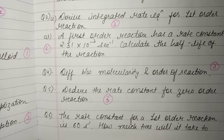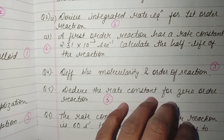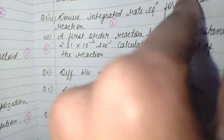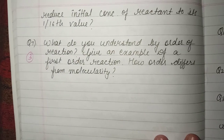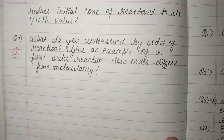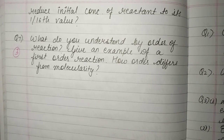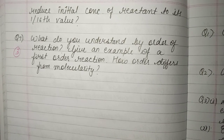The sixth question is also a numerical: given the rate constant, you have to find the time when the concentration will be one-sixth of its initial concentration. This is also an NCERT question and it is very important.